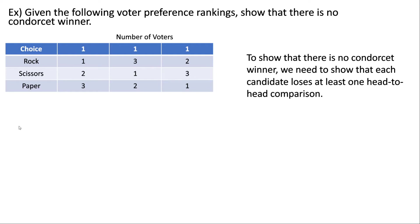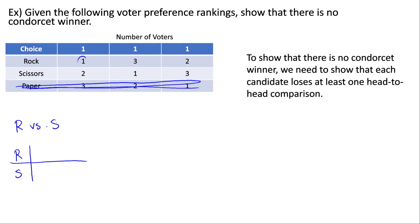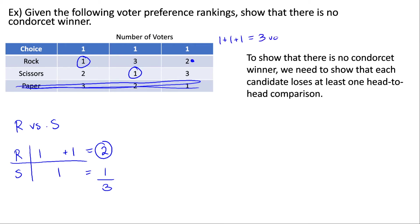We start with Rock versus Scissors, eliminating Paper. One voter has their first choice there, one voter has their first choice there, and one voter chooses between their second and third choice and votes for their second choice. Rock gets two votes and Scissors gets one, adding up to three total — which matches the three voters. Rock wins and Scissors loses, so Scissors can't be a Condorcet winner because they've lost one head-to-head comparison.